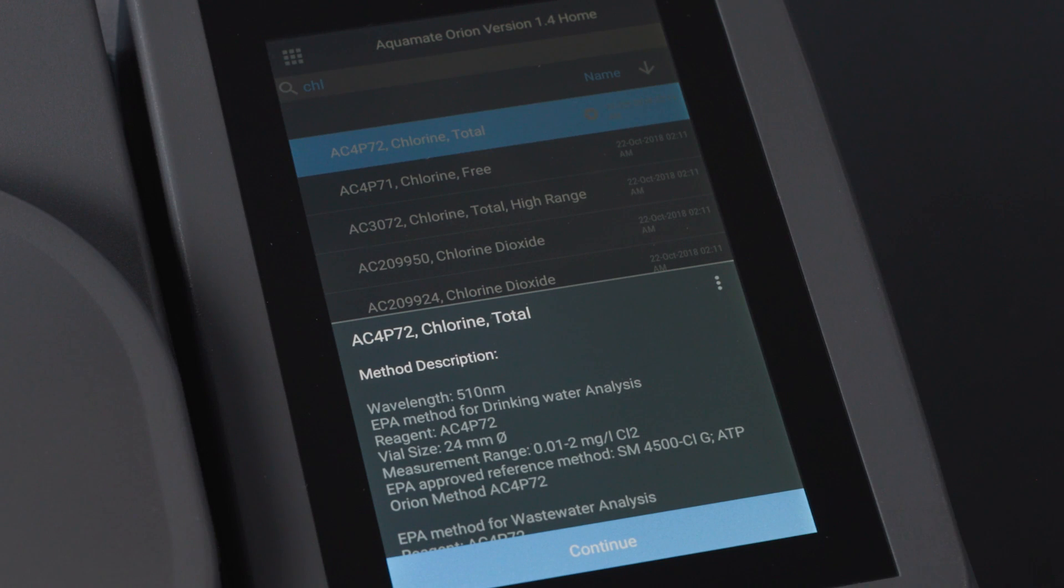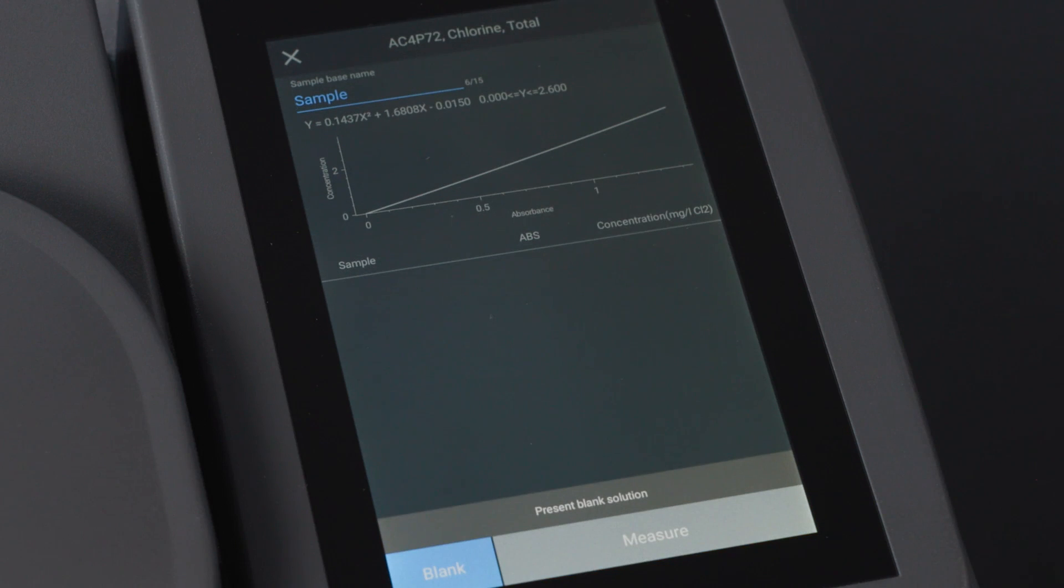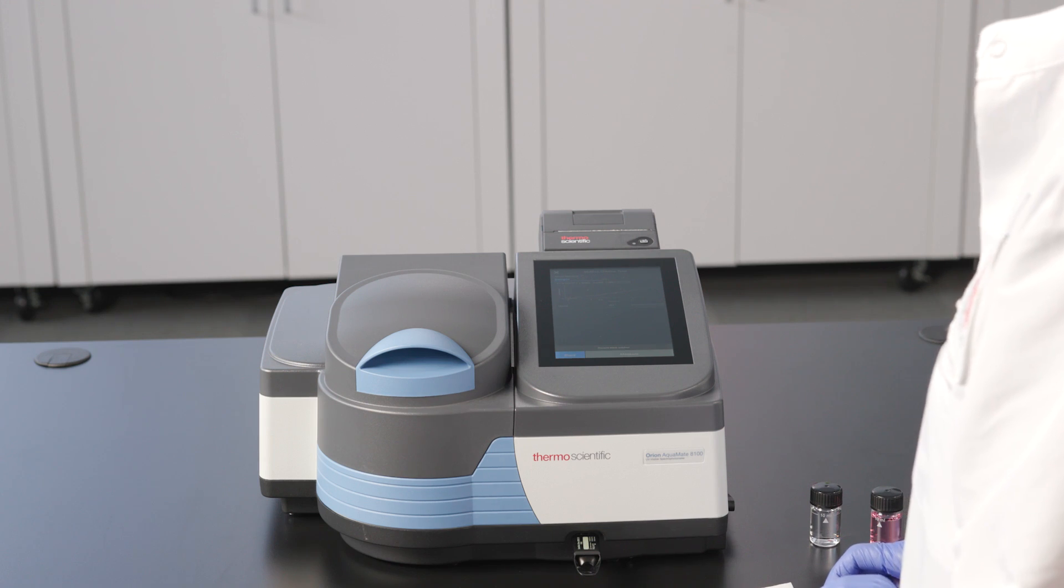Once we've confirmed that we have the right method, we can select Continue. This brings us to the measurement screen. As part of the measurement process, we first need to run a blank.